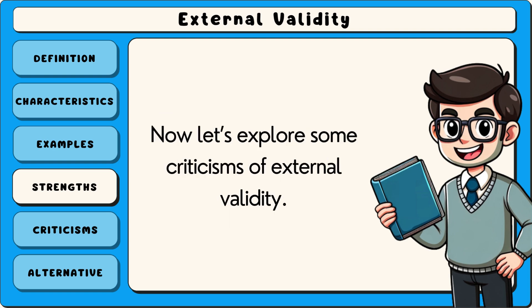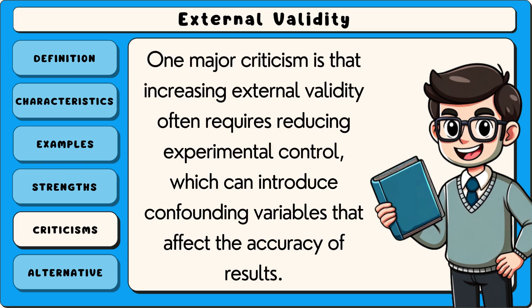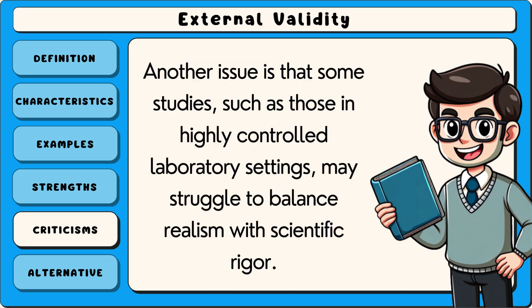Now let's explore some criticisms of external validity. Despite its importance, external validity has some limitations. One major criticism is that increasing external validity often requires reducing experimental control, which can introduce confounding variables that affect the accuracy of results. Another issue is that some studies, such as those in highly controlled laboratory settings, may struggle to balance realism with scientific rigour.